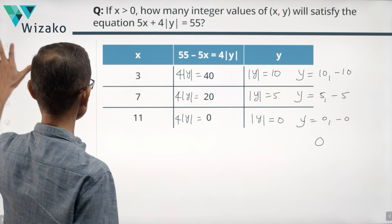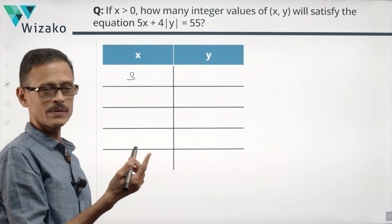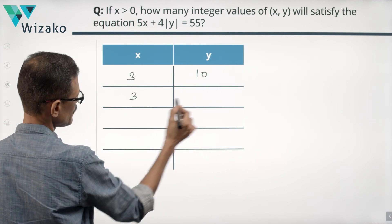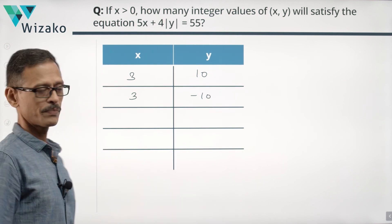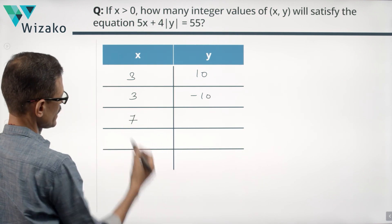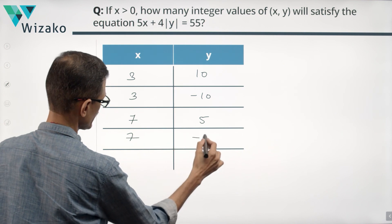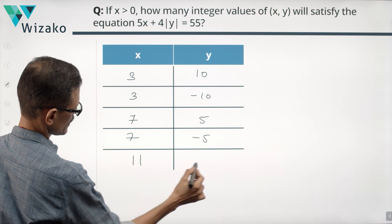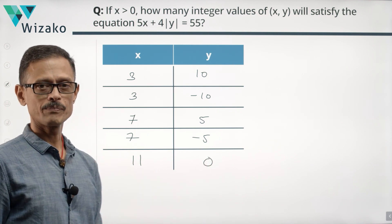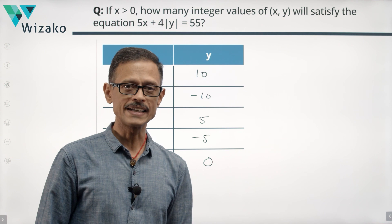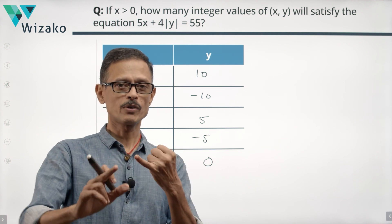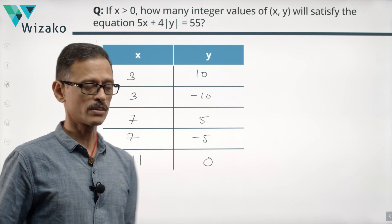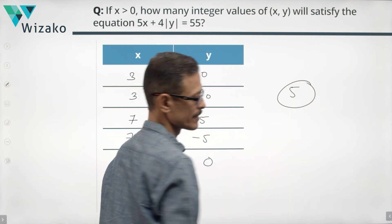Listing all (x, y) pairs: x equals 3 gives y equals 10 or minus 10; x equals 7 gives y equals 5 or minus 5; x equals 11 gives y equals 0. So there are five sets of values that satisfy the condition that x is a positive integer, y is an integer, and the equation 5x plus 4 modulus of y equals 55.